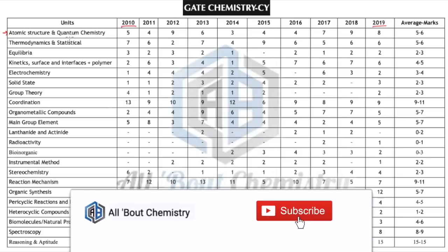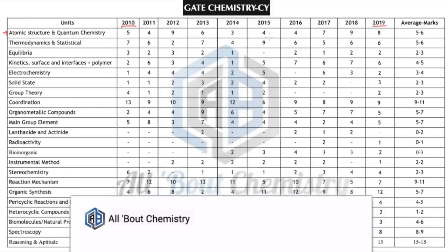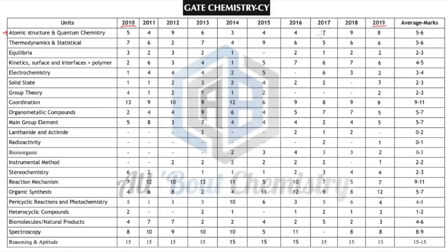Atomic structure and quantum chemistry covers the major portion of physical chemistry. From the last three exams you can see that questions from this topic have increased — earlier they were around three to four marks, but now they have been asked for seven, eight, or nine marks. So you can expect more questions from this topic.